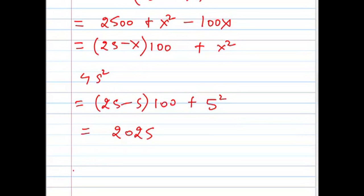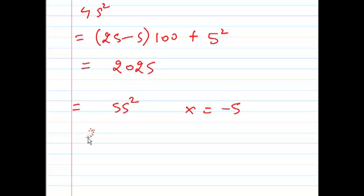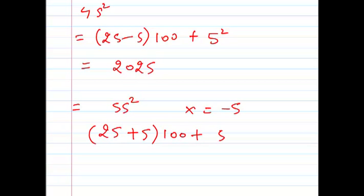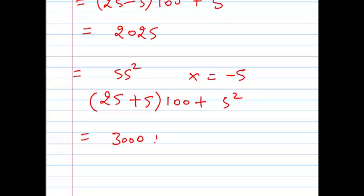And I have to do the 55 square. Then I have to just write x is equal to minus 5, and then I can do 25 plus 5 into 100 plus 5 square. So that will be equal to 3025.